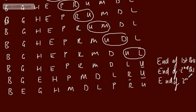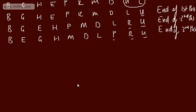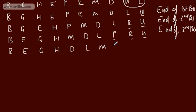Pass four: B — no swap with E. E and G? No. G and H? No. H and D? Yes, swap. H and M? D comes before H so we check D and M — yes, swap D and M. L comes before M so consider M and L. End of fourth pass — U, R, P, and M are in place.